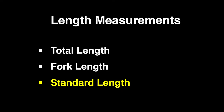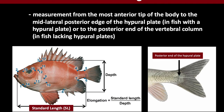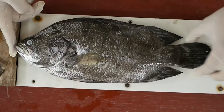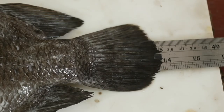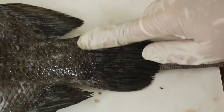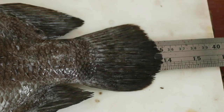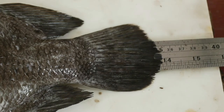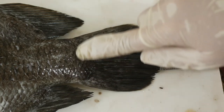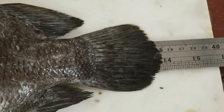Standard length is the shortest among the three length dimensions and is simply the measurement without the caudal fin. Typically, it is measured only up to the mid-lateral posterior edge of the hypural plate if the fish has one, or to the posterior end of the vertebral column if it has none. The standard length is rarely used in fisheries studies except in systematics or taxonomy wherein it is considered the standard length dimension. This is mainly because the ends of the caudal fin rays are often bent or missing in preserved specimens in laboratories or museums. Its lesser popularity can also be attributed to the inherent difficulty of accurately recording fish measurements with the working speed used in the field.